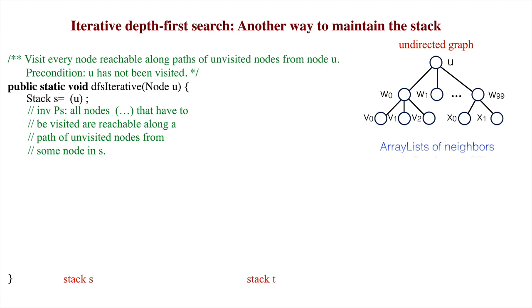Using this graph as an example, assume that array lists B, C, D, and E contain the children of nodes U, W1, W2, and W99.